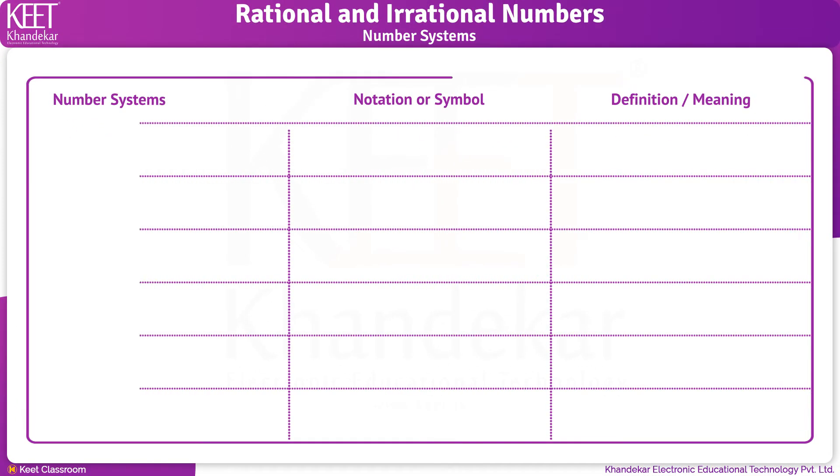The first number system is the natural numbers, denoted by symbol N. Numbers starting from 1, 2, 3, 4, 5 and so on up to infinity are natural numbers.